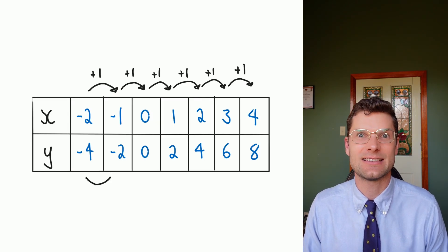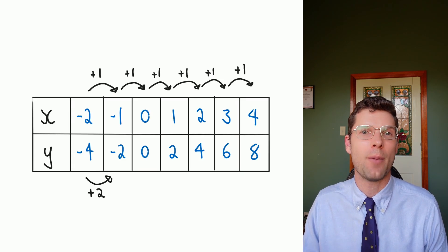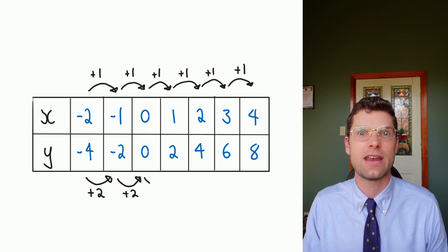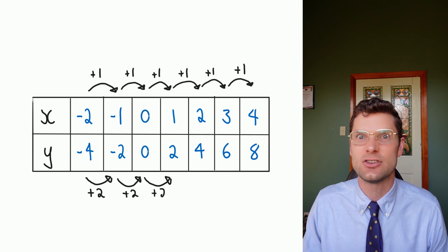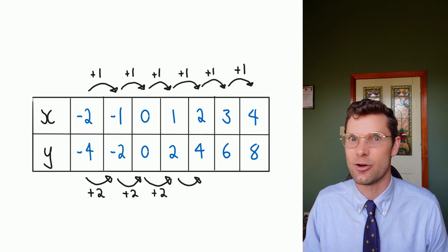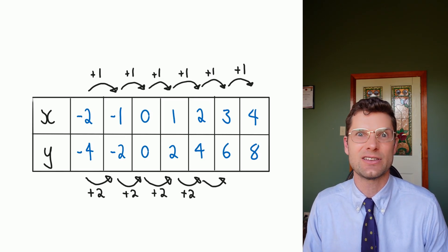Then the exact same thing's happening for y, but instead of going up one, it's going up two. From -4 to -2, +2. -2 to 0, +2. 0 to 2, +2. So if you can see that pattern,